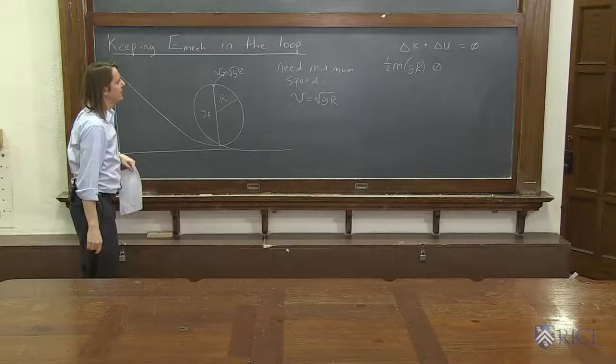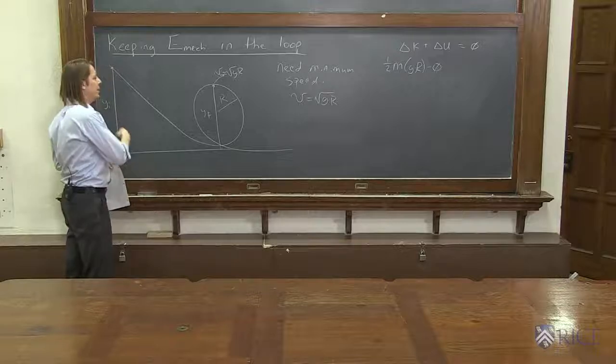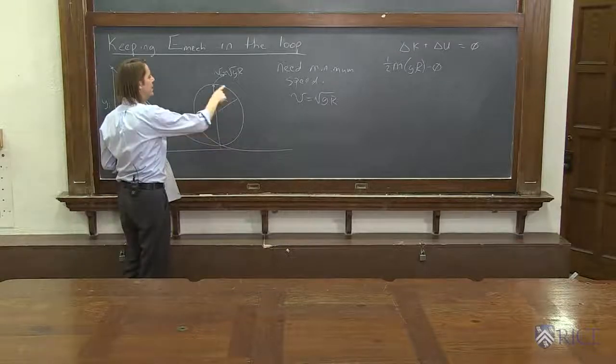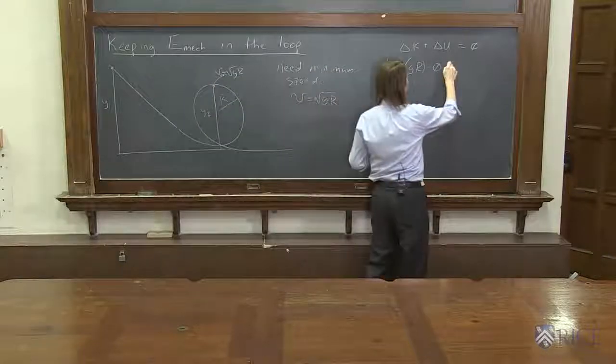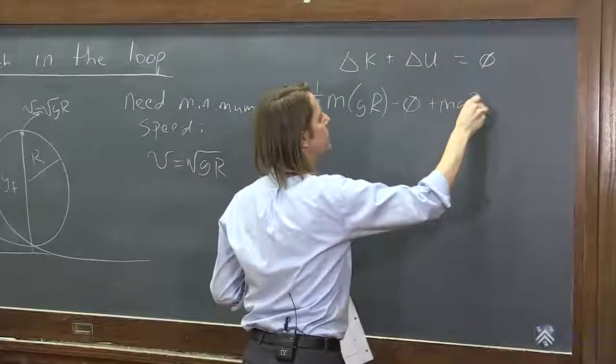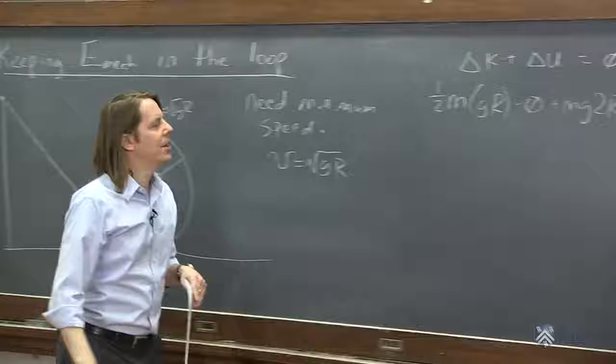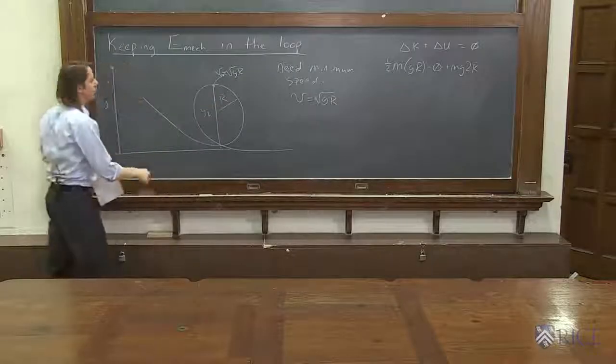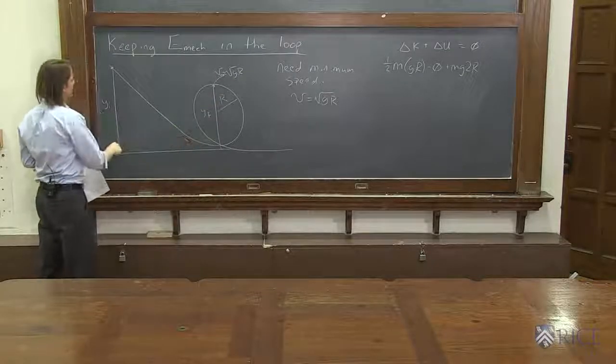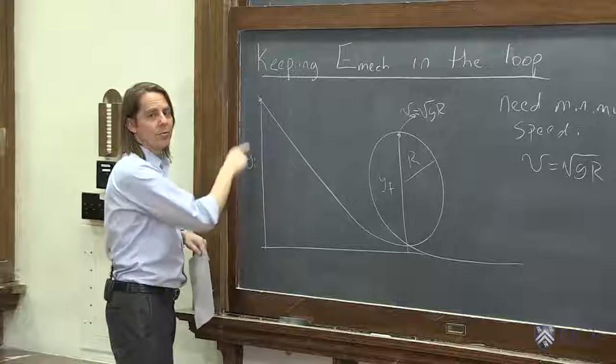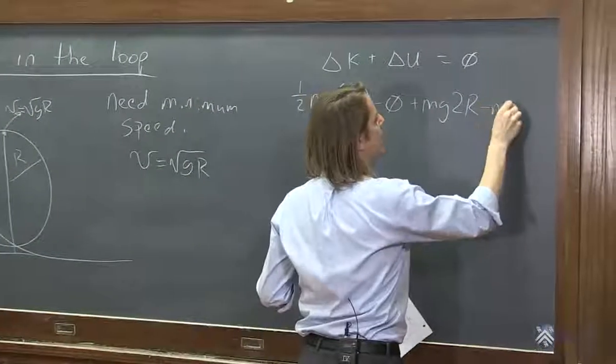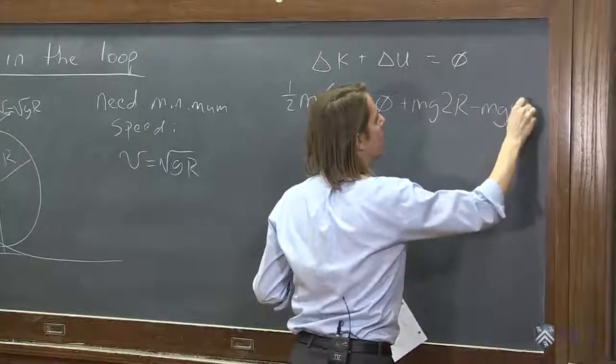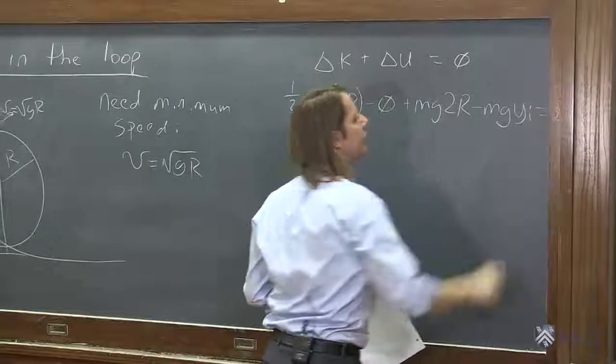All right. And let's see. The final gravitational potential energy is m g times 2 r, plus final m g 2 r minus initial, which is m g, and then the height we're looking for, y i. Minus m g y initial equals 0, like that.